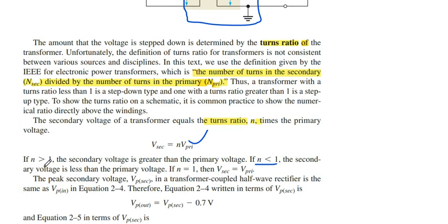V secondary is equal to N times V primary. If N is less than one, the secondary voltage is always less than the primary voltage. If N is greater than one, the secondary voltage is greater. If the secondary voltage is less than the primary, it is a step-down transformer; if greater, it is a step-up transformer. If N equals one, secondary voltage equals primary voltage.